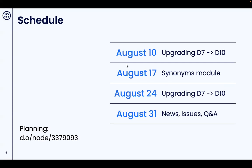Next week we'll loop back to looking at the upgrade path from Drupal 7 to 10. On the 17th I want to take a look at the synonyms module, something that has a lot of potential to help site owners keep their taxonomy terms at bay, amongst other possibilities. Then on the 24th, go back to the upgrade again, and on the 31st open the floor to look at whatever issues you might run into. If you have ideas for a topic or something you'd like to present on yourself, please drop an idea in our planning issue.